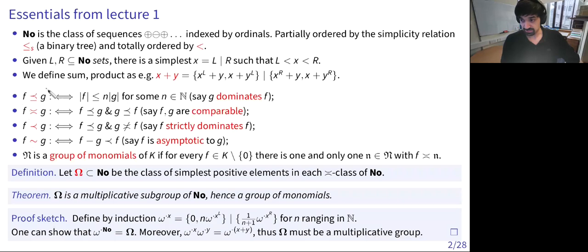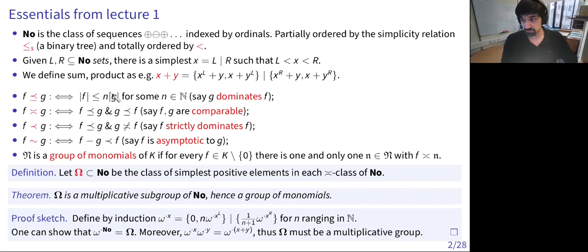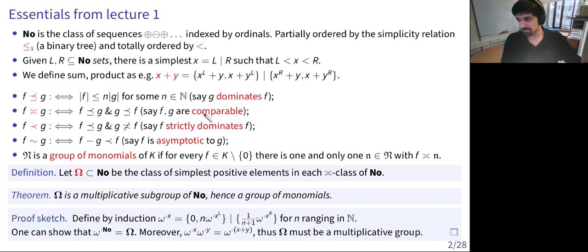Then we have this notation that works in every ordered field or even ordered ring — it's the same notation that Lau is using in his course. f is dominated by g when the absolute value of f is less than some integer multiple of the absolute value of g. This is a quasi-order, a total one, so you can define an equivalence relation. Two things are in the same class when they mutually dominate each other. I should stop using the word 'comparable' because apparently it conflicts with notation used in other places, so we'll delete that.